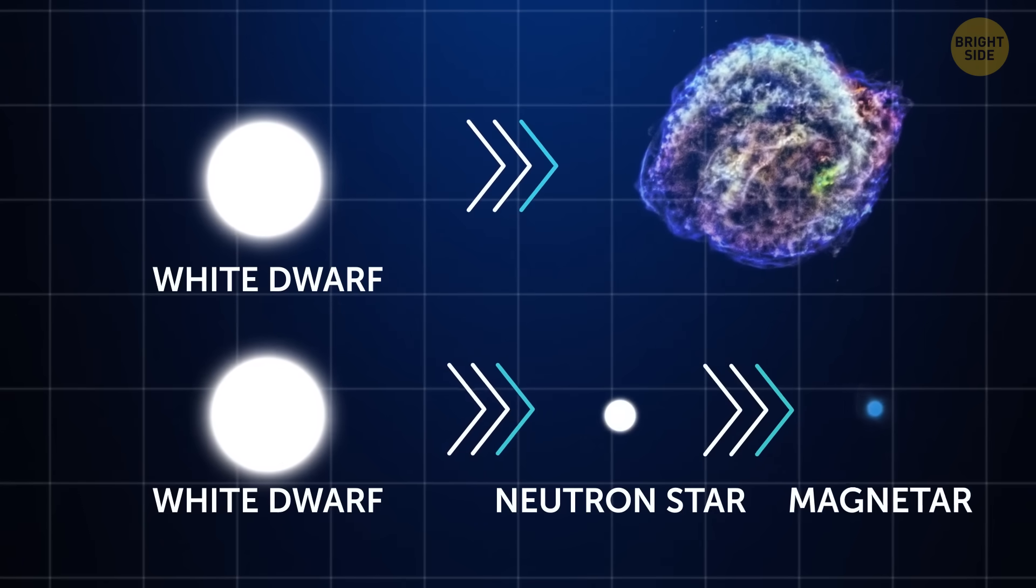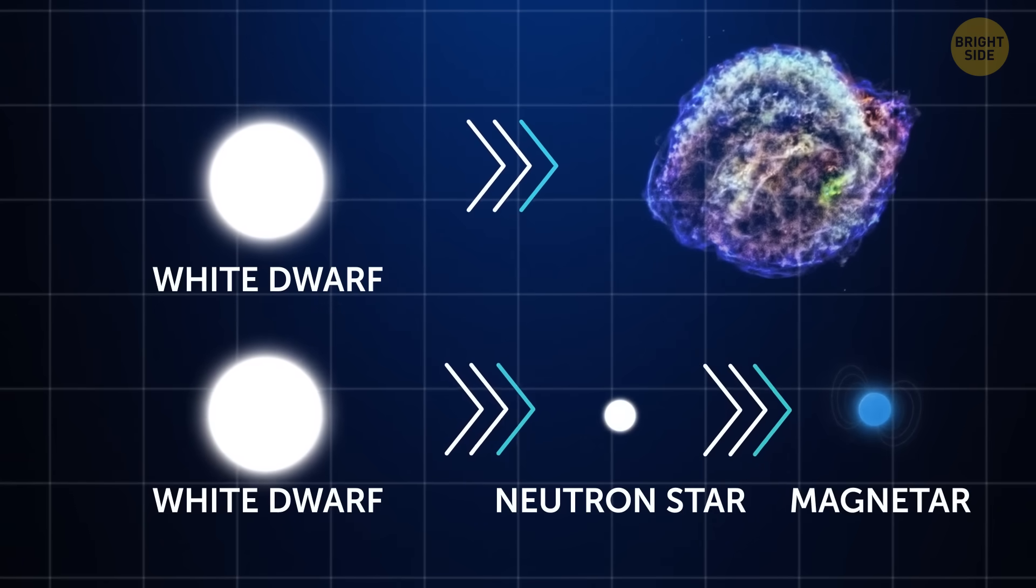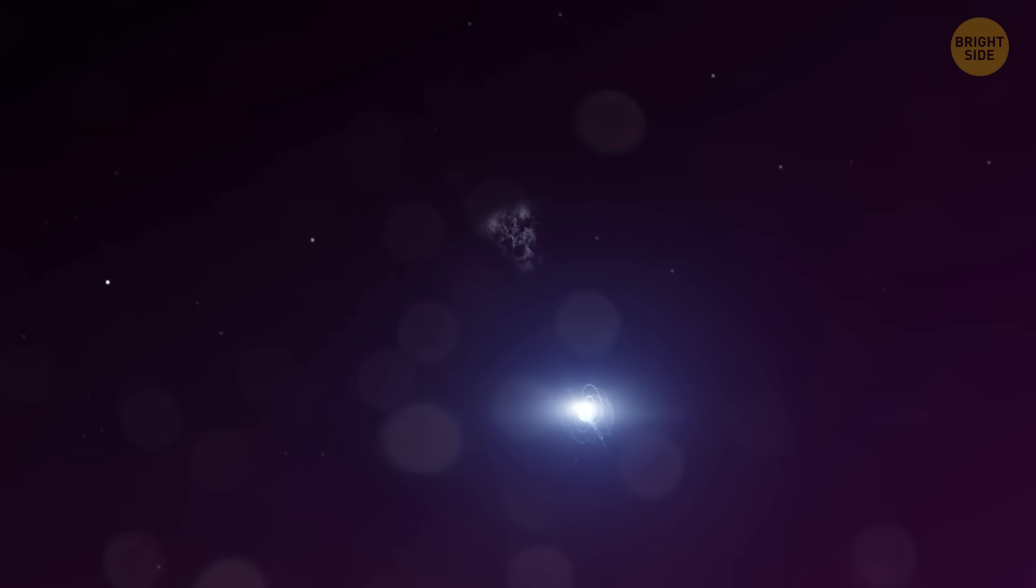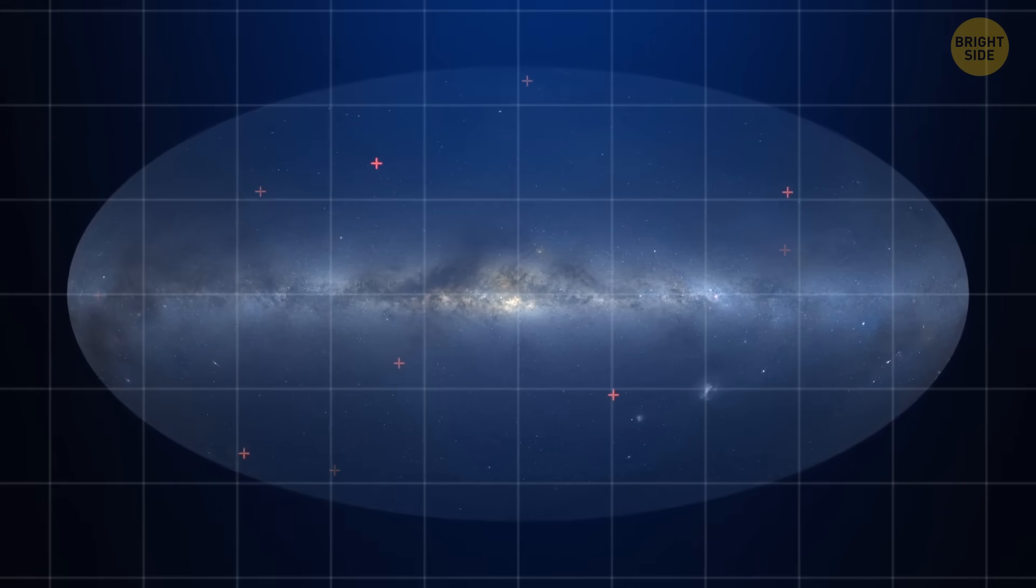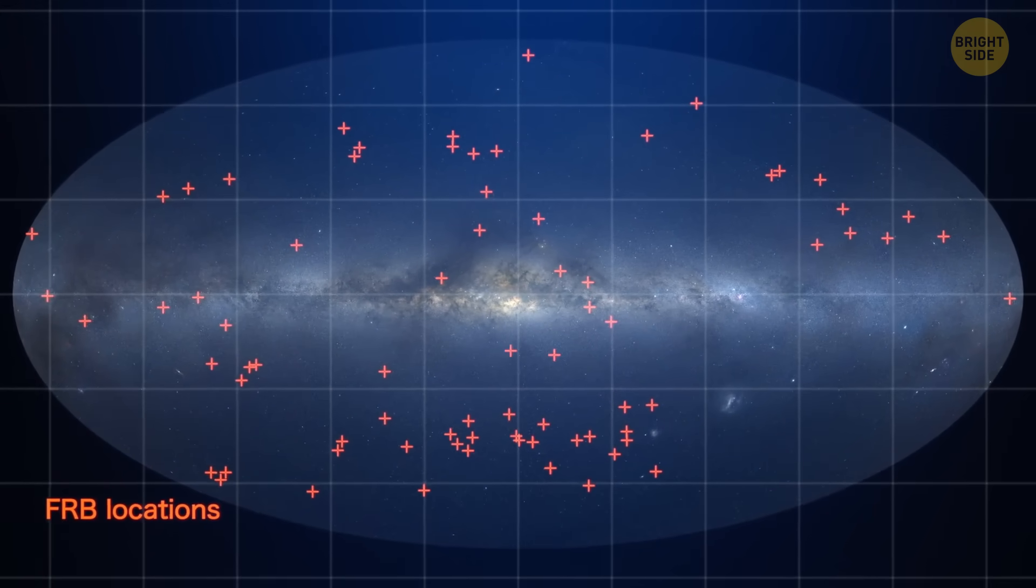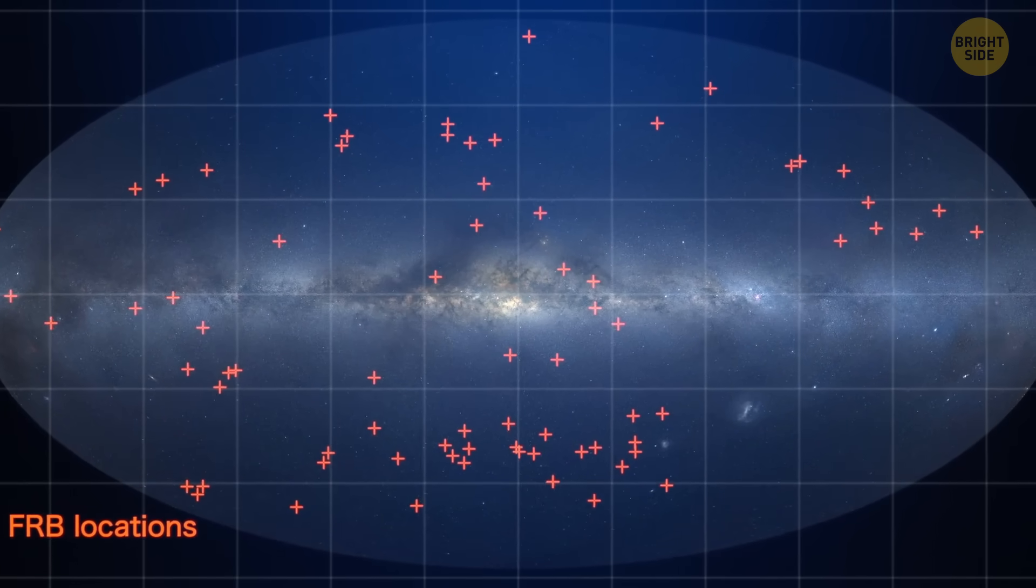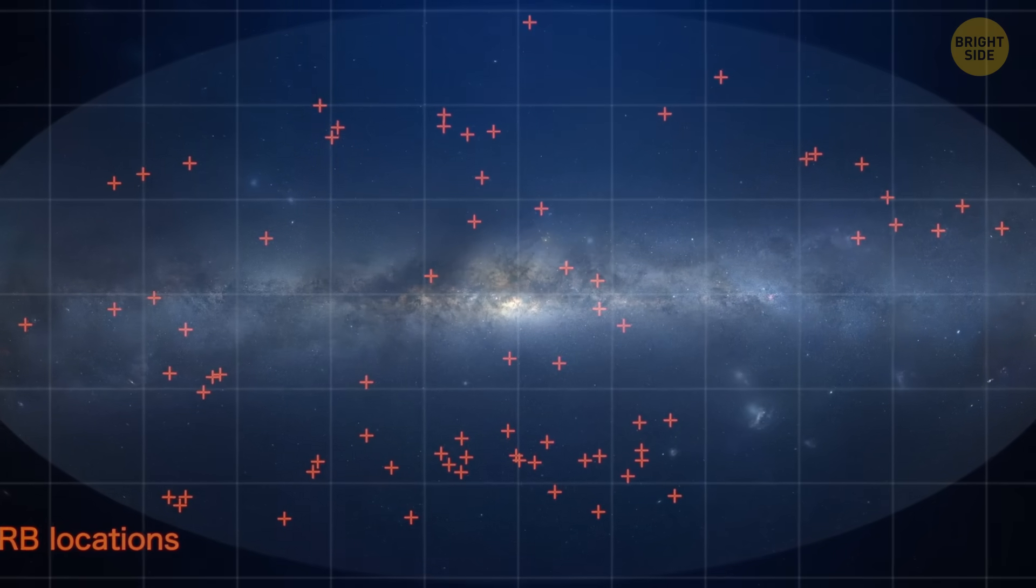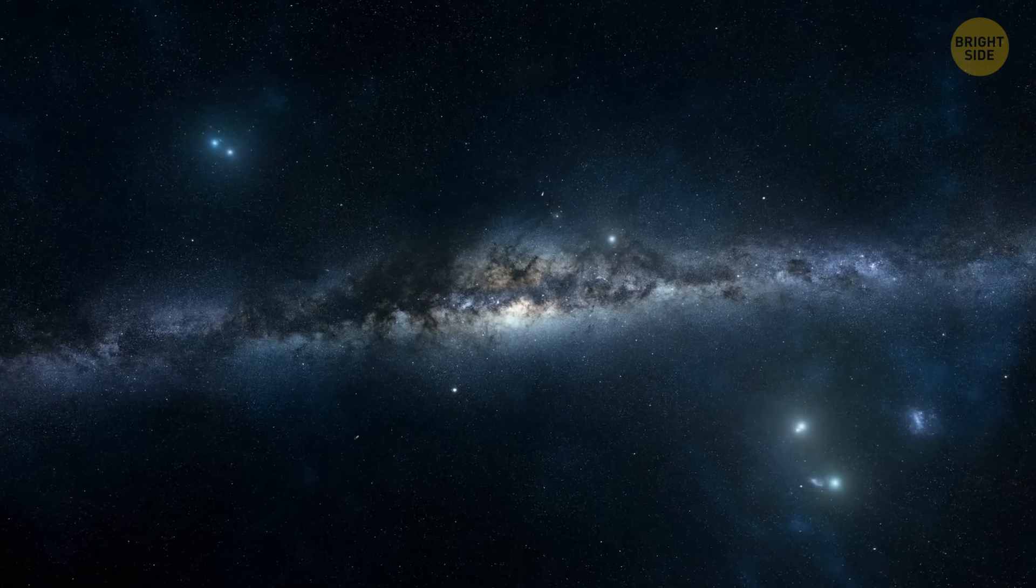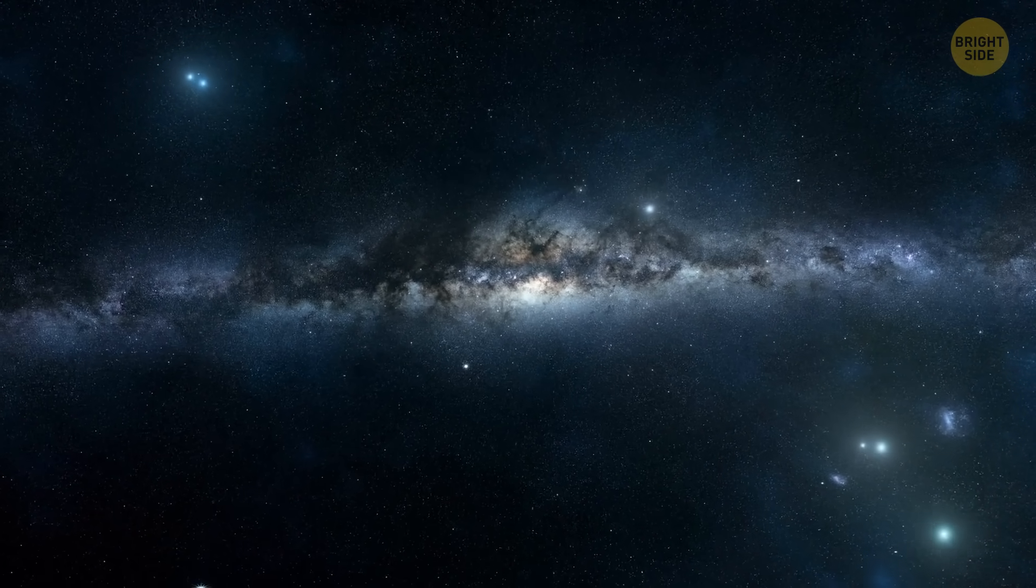This neutron star could then become a magnetar. This unusual way of forming a magnetar also gives clues about another mystery – fast radio bursts, or FRBs. These are very quick and powerful flashes of radio energy from deep space. Some FRBs come from galaxies that are so old, there shouldn't be any exploding stars left. But if magnetars can be born from collapsing white dwarfs, that might explain how those FRBs are still happening.